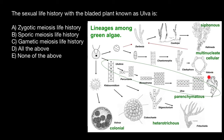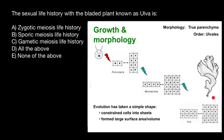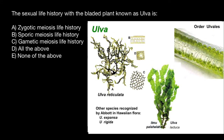Here's how the adult plant looks like. This algae has true parenchyma, belongs to the order Ulvales, and the thallus of this algae represents a large sheet of cells anchored to the substrate by a holdfast. This is how this alga looks like.